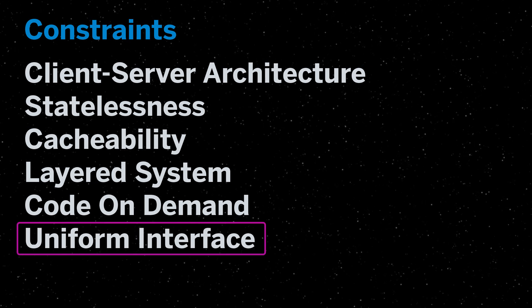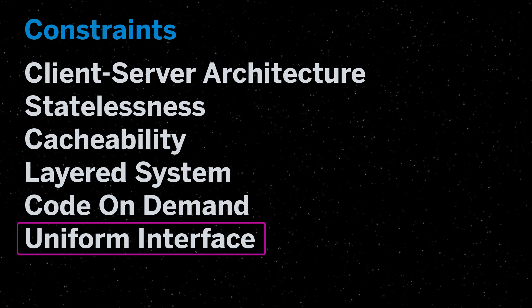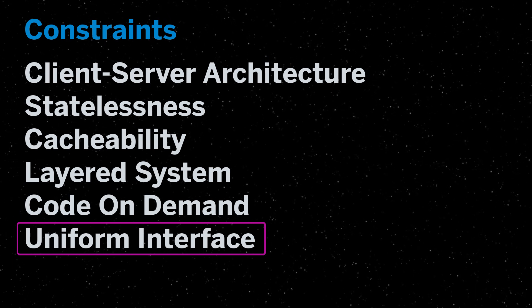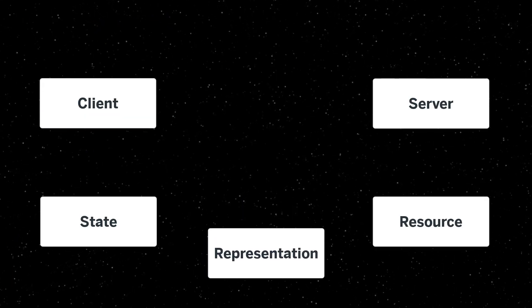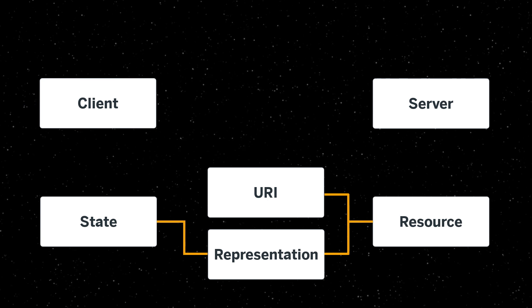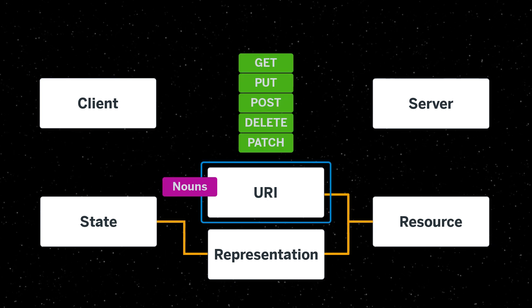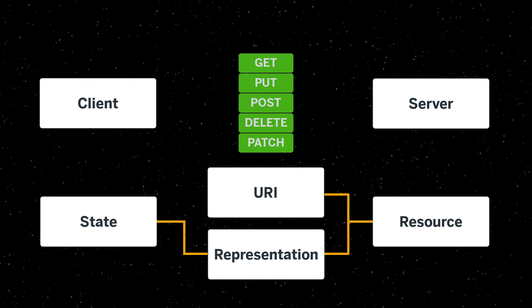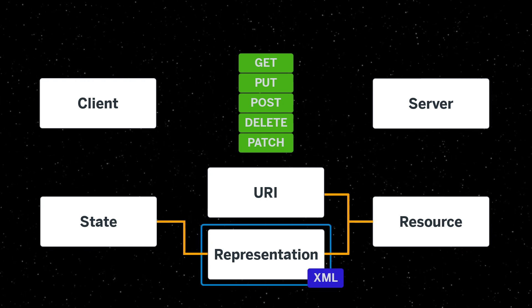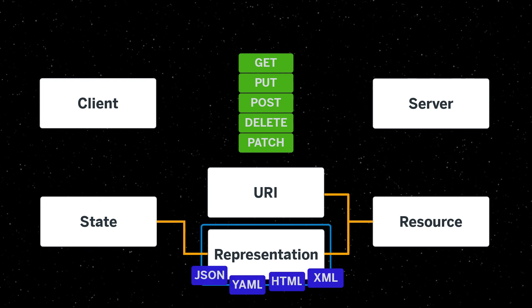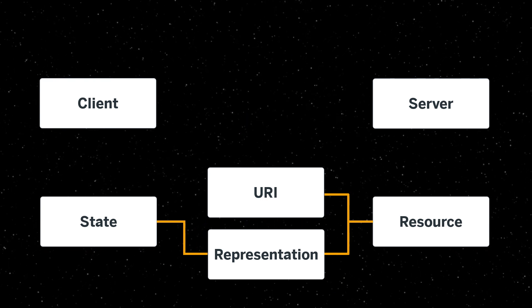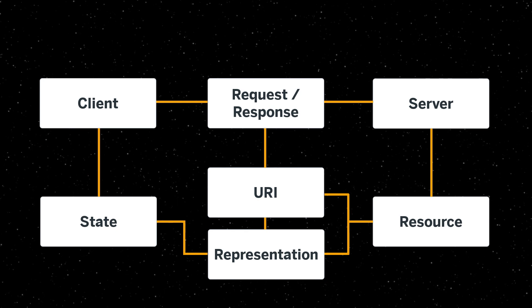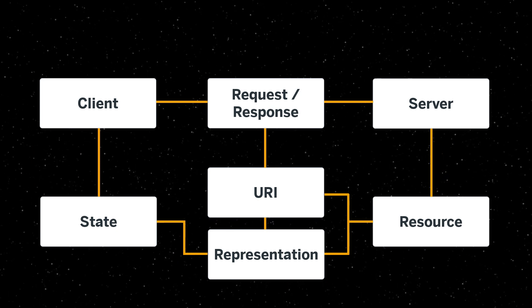The uniform interface constraint is perhaps the most relevant to understanding what a RESTful API is and how such APIs are implemented. There are resources identified with URIs — these are the nouns, while HTTP methods are the verbs. These resources can have multiple representations such as XML, HTML, YAML, JSON, and more, which can be negotiated and transferred with HTTP requests and responses using the appropriate response codes.